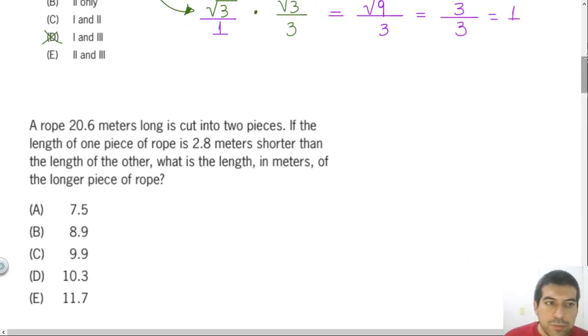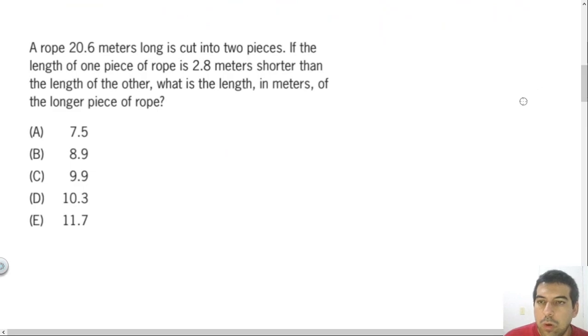This one says we have a rope of 20.6 meters long, and the rope will be cut in two pieces. If the length of one piece of rope is 2.8 meters shorter than the length of the other, what is the length in meters of the longer piece of rope?